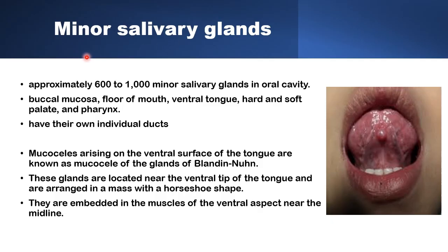It's estimated that there may be somewhere between 600 and 1000 minor salivary glands in the oral cavity, distributed along the buccal mucosa, the floor of the mouth, the ventral surface of the tongue, the hard and soft palate, and even the pharynx. They have their own individual ducts to drain saliva into the oral cavity.